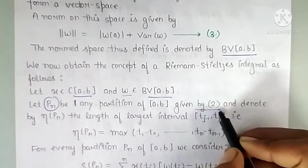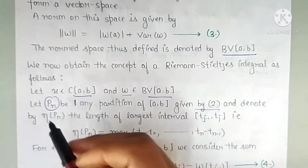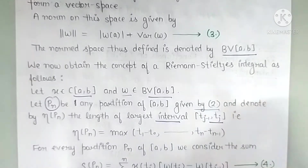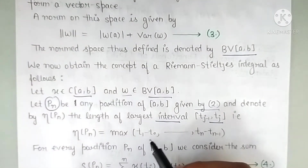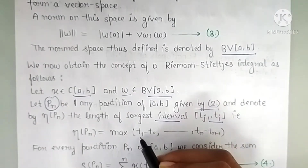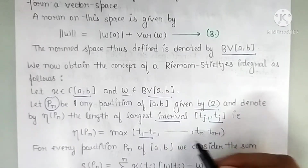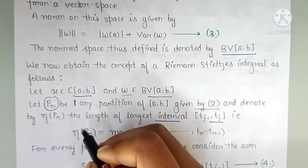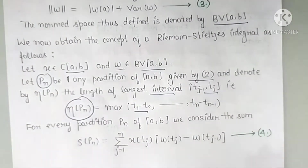Among all the sub-intervals of a partition, the largest one is the mesh, denoted η(P_n). This equals the maximum of |t1−t0|, |t2−t1|, |t3−t2|, and so on, over all sub-intervals of the partition.